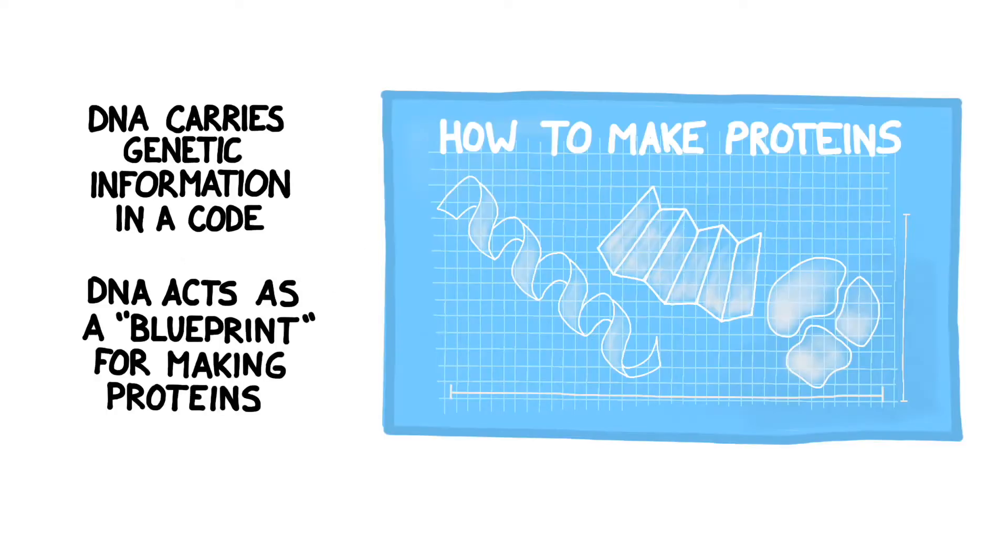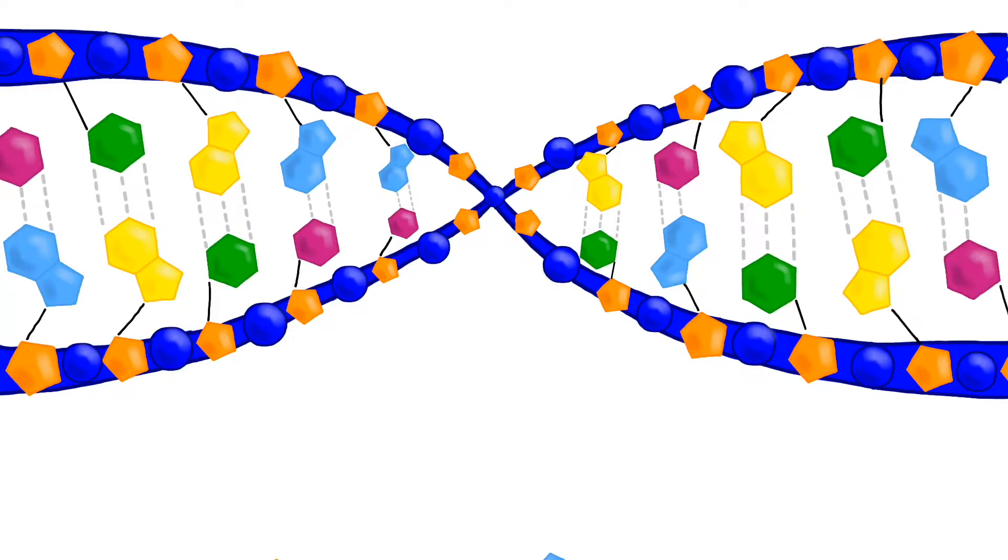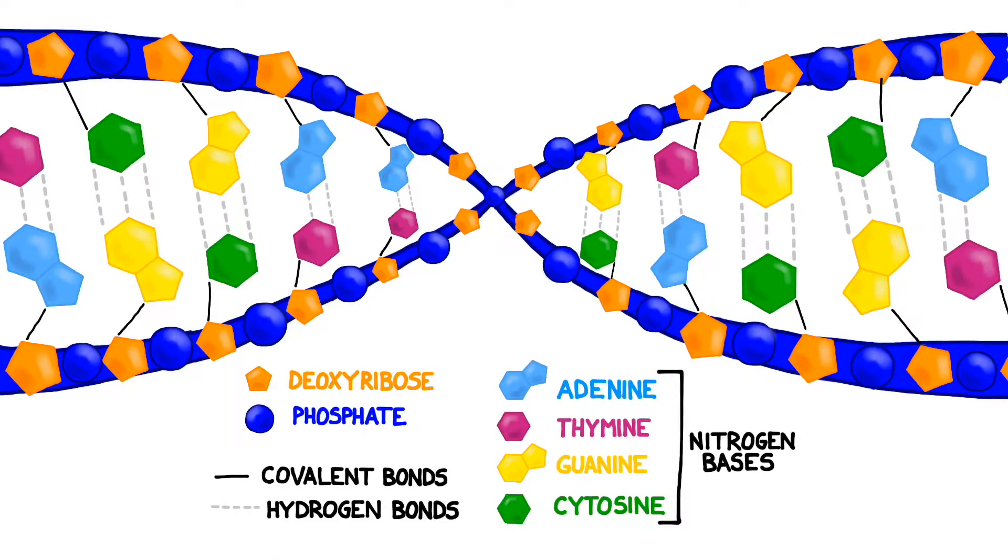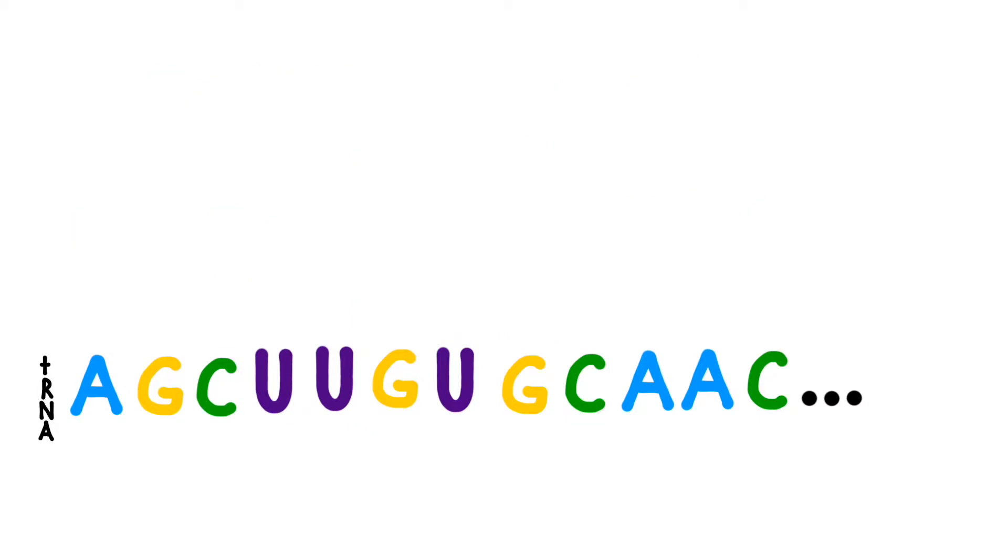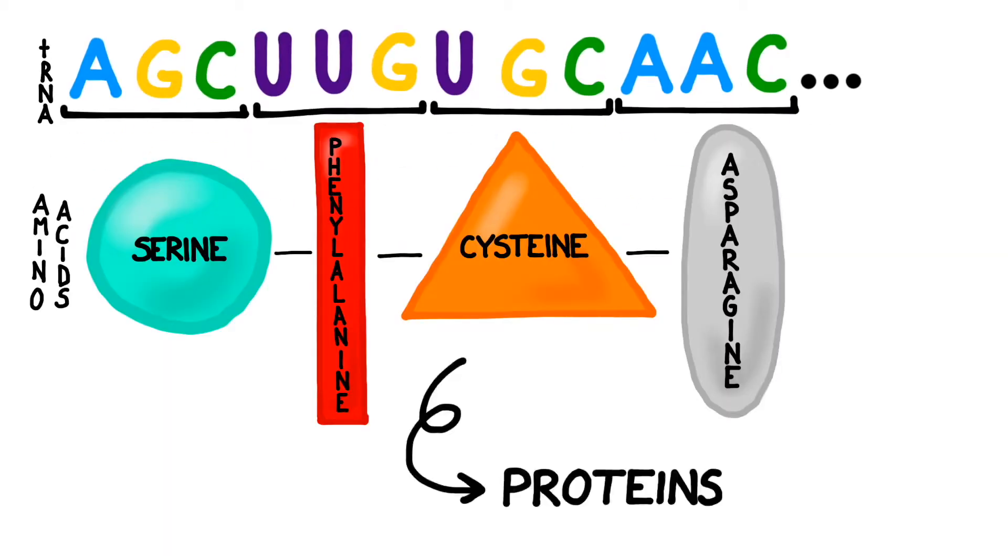DNA contains a genetic code that acts like a blueprint for making proteins. The genetic sequence is coded using a series of nitrogen bases. Through the processes of transcription and translation, cells refer to the DNA code when manufacturing proteins.